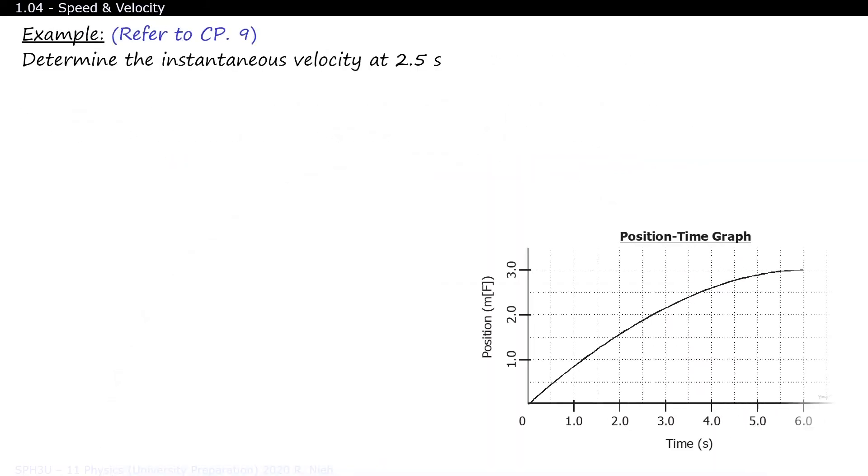Let's revisit the position-time graph again. But this time, let's determine the instantaneous velocity at the 2.5-second mark. Remember, you can't find slope with a curve. And you can't find slope with only one point. So what we'll have to do is draw a tangent that touches the curve at the 2.5-second mark.